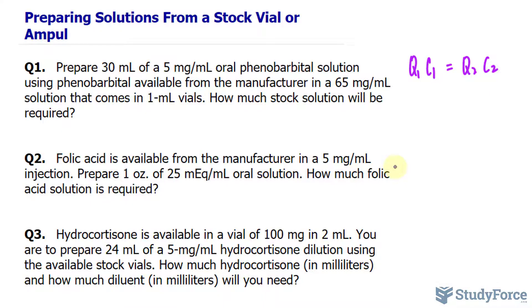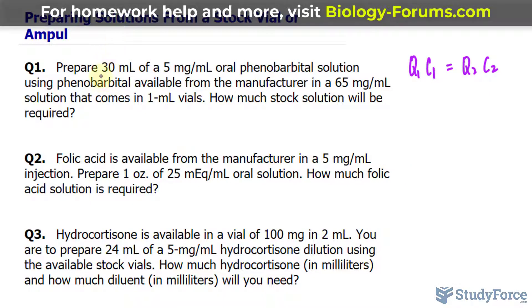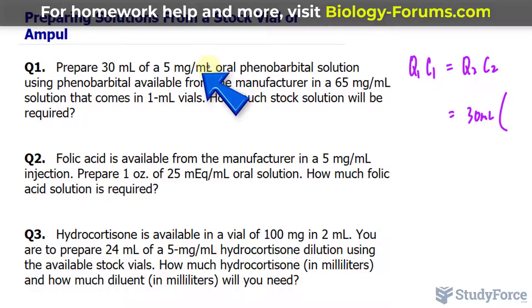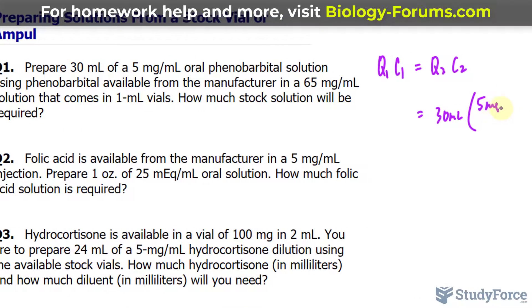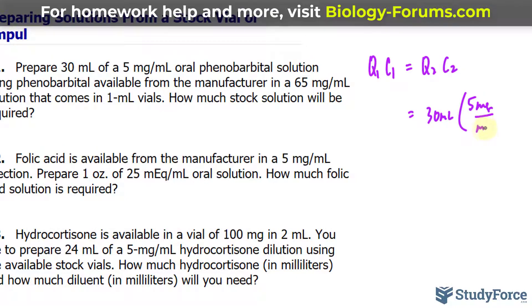Now our final solution — they want 30 milliliters, so that will be the quantity, and I'll replace Q2 with 30 milliliters. And the concentration that they want is 5 milligrams per milliliter.